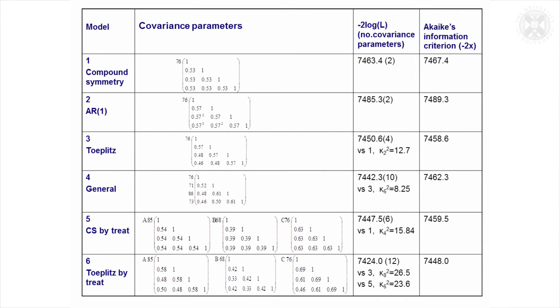A more structure involving more parameters—this general structure—so we've got a separate correlation for each pair of time points and a separate variance for each time point. In a similar way, the model can be compared—we'll compare it to model three, which we showed was better than model one using a chi-squared test.